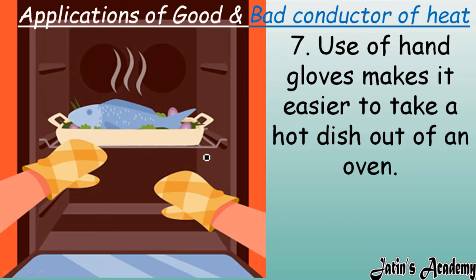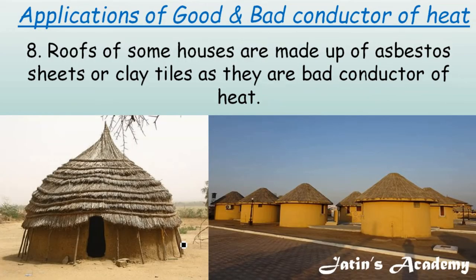The seventh application is that we always use hand gloves when taking a hot dish from the oven. The oven is very hot, but hand gloves are poor conductors of heat, which do not allow the heat to enter our body, so we do not feel the heat through the gloves.